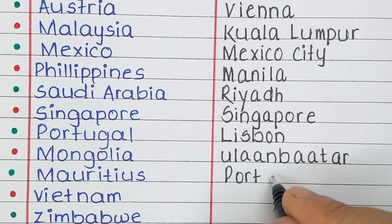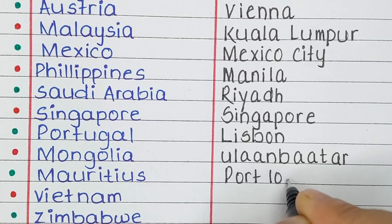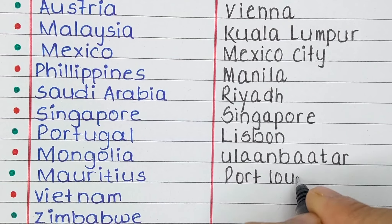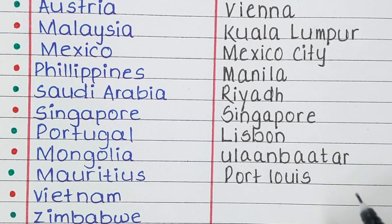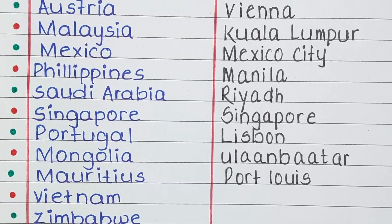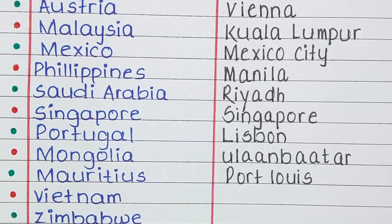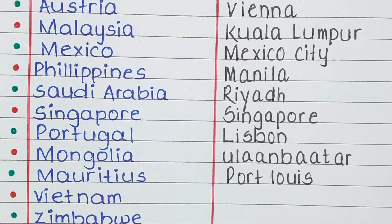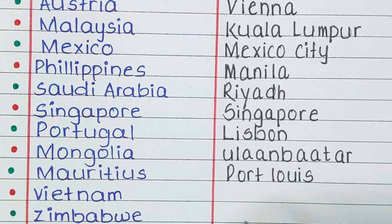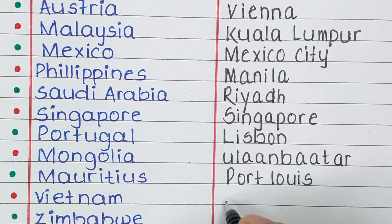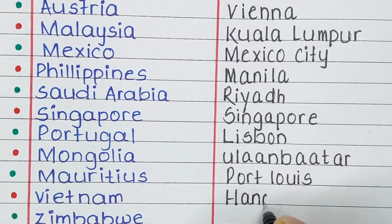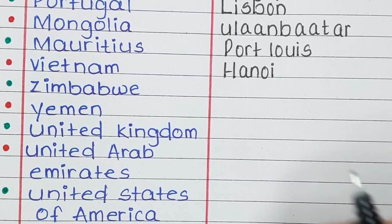Next is Mongolia. The capital of Mongolia is Ulaanbaatar. Next country is Mauritius. The capital of Mauritius is Port Louis.